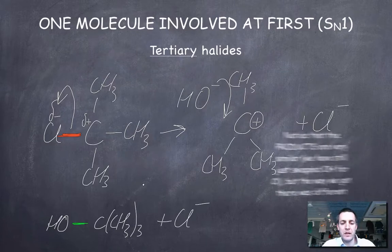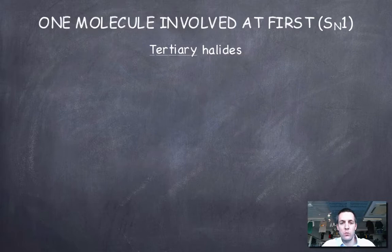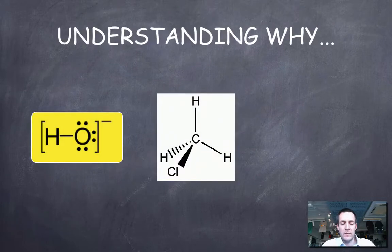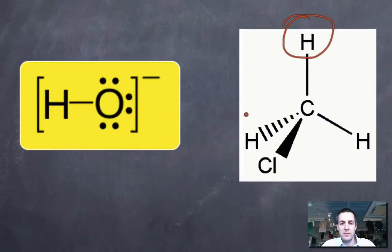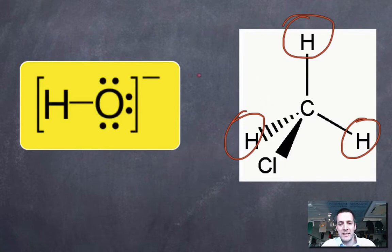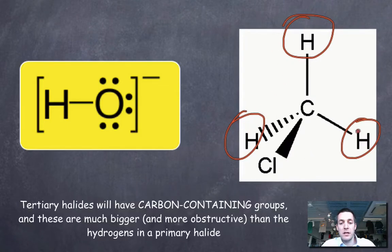And if we want to try and understand why that is, well there are two different ways of really understanding this. These groups here that the nucleophile is trying to kind of get itself in between to attack this carbon atom—if they're very small, as they are in a primary halide, then it's easy for the nucleophile to get in there, and it can start making its bond while this one is breaking. However, if these are very big, like we said on the previous slide, that's going to stop the nucleophile getting in there. So perhaps this bond will break first.